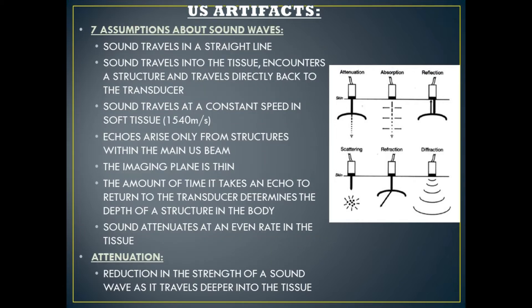Let's talk about the assumptions that an ultrasound machine makes about sound waves. Number one, sound travels in a straight line. Number two, sound travels into the tissue, encounters a structure, and travels directly back to the transducer. Number three, sound travels at a constant speed in soft tissue — 1540 meters per second.